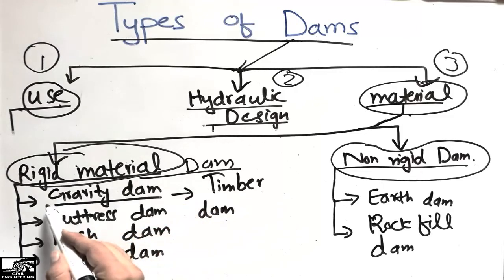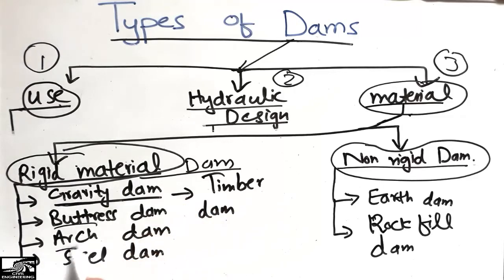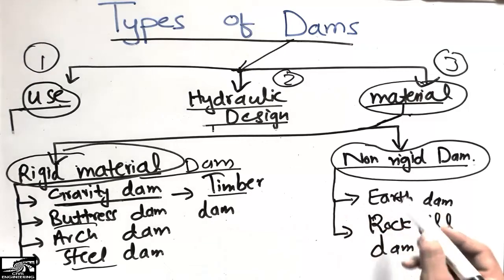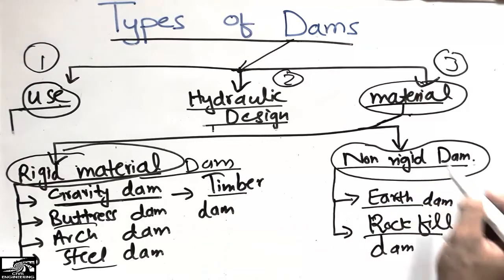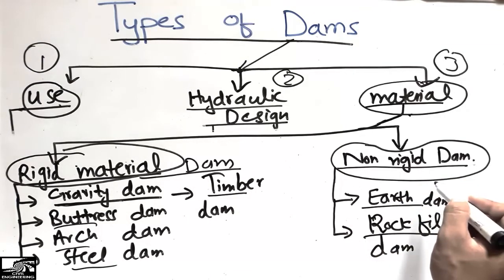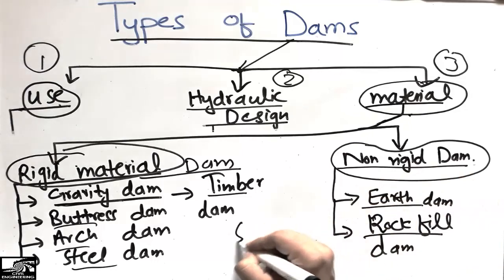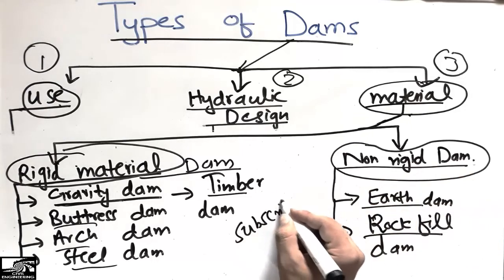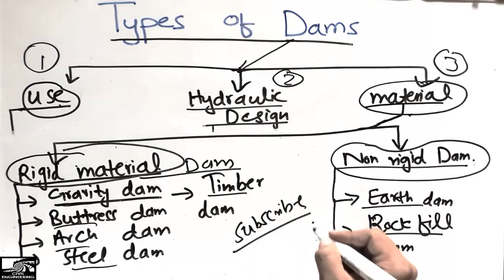The rigid material dam may have further classification of five types: gravity, buttress, arch, steel, and timber. The non-rigid dams include earth and rock-fill dams, which are made of non-rigid materials. Don't forget to subscribe to our channel for more civil engineering videos. Thank you.